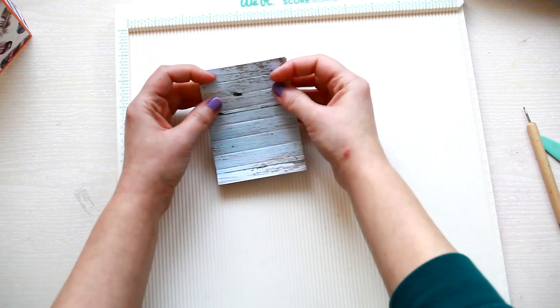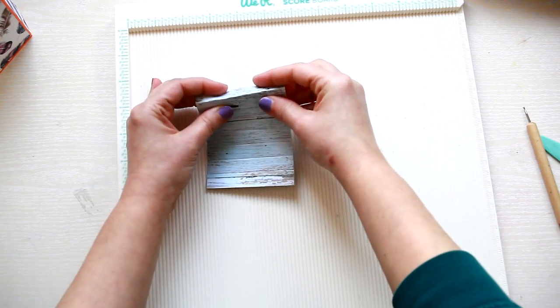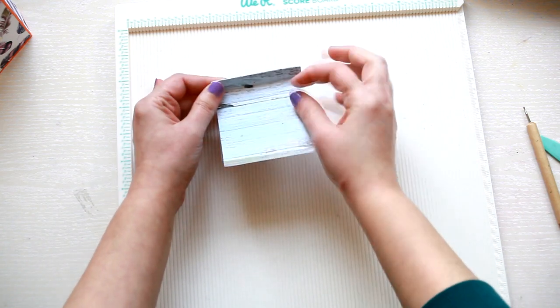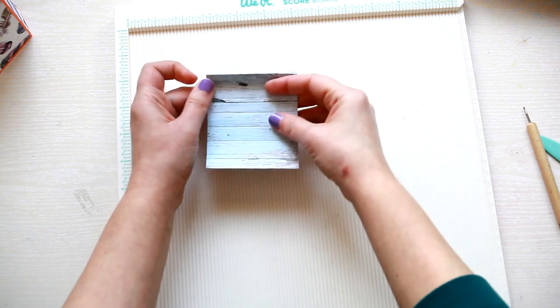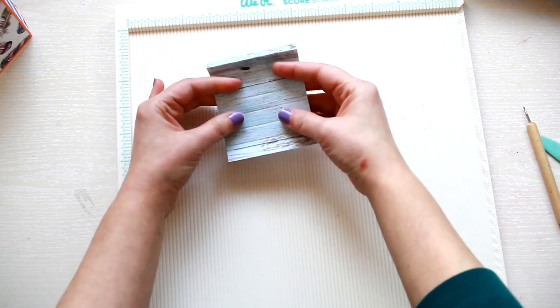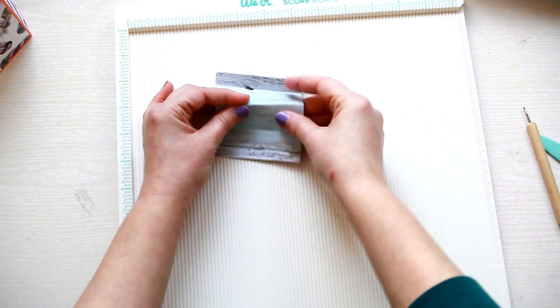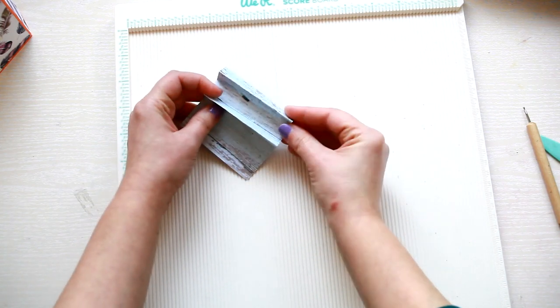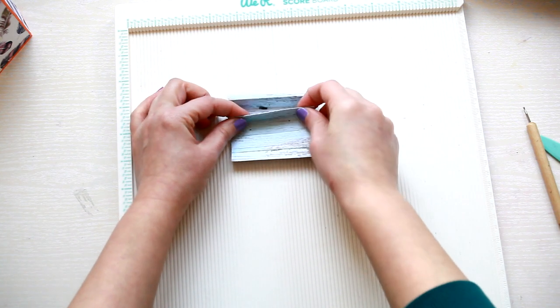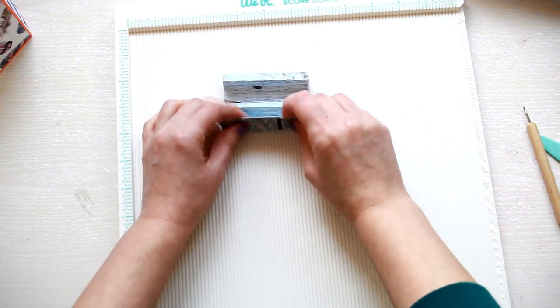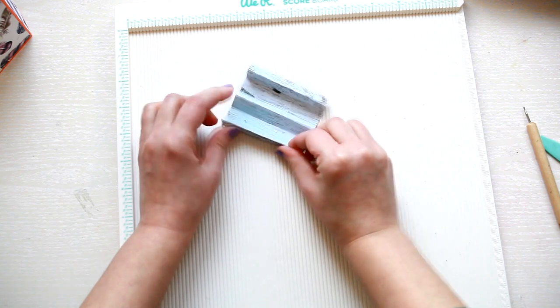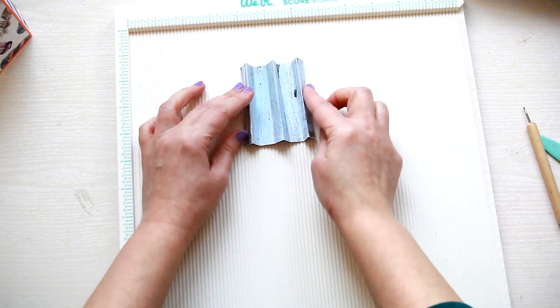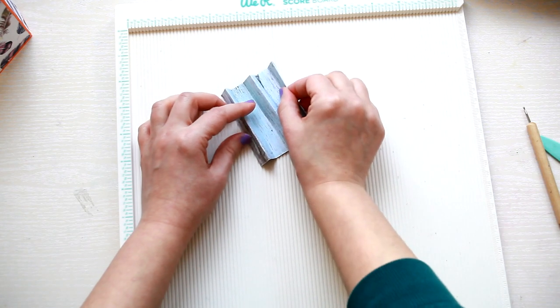After scoring we are going to fold the first two sections. We will create a mountain fold. Skip one section, create another mountain fold. Skip the next section and create one last mountain fold. So you'll have three mountain folds separated by a small section.